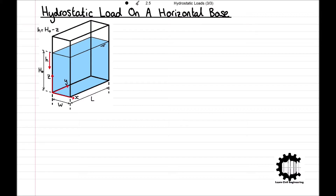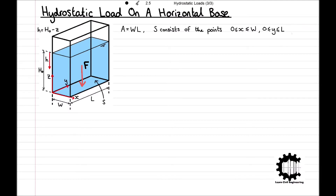With this information and the techniques learnt in the previous videos, we will now work through how to calculate the hydrostatic load F and its corresponding centre of pressure that acts on the tank's base at Z equals 0. We will let S denote the surface of the tank's base, which has an area of A equals W times L. S consists of the points from X equals 0 to X equals W, Y equals 0 to Y equals L, and Z equals 0.